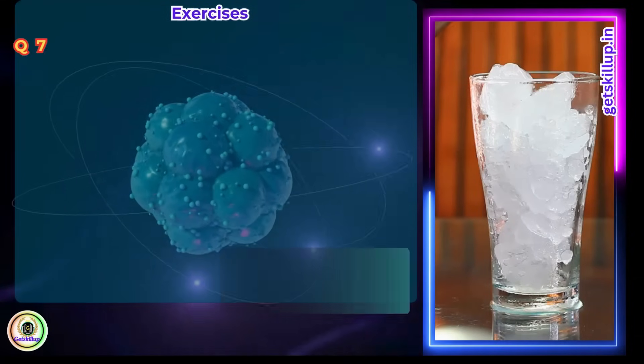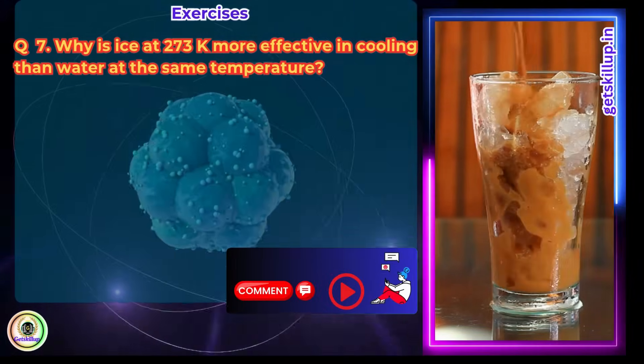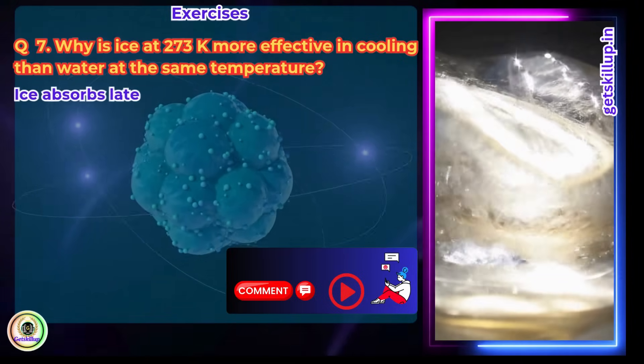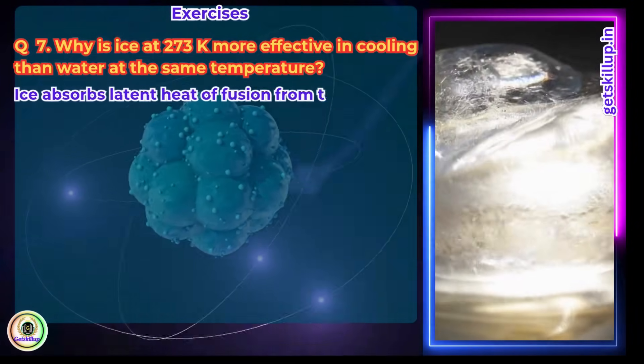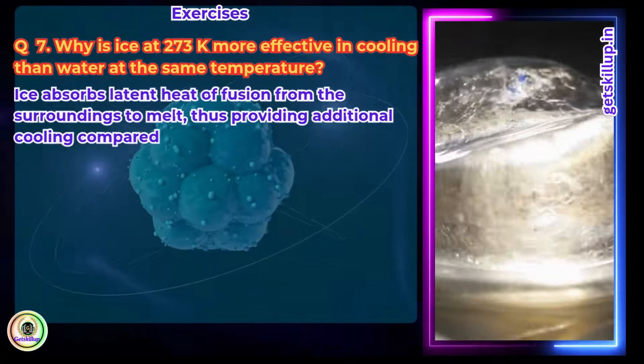Question 7: Why is ice at 273 Kelvin more effective in cooling than water at the same temperature? Answer: Ice absorbs latent heat of fusion from the surroundings to melt, thus providing additional cooling compared to water at 273 Kelvin.